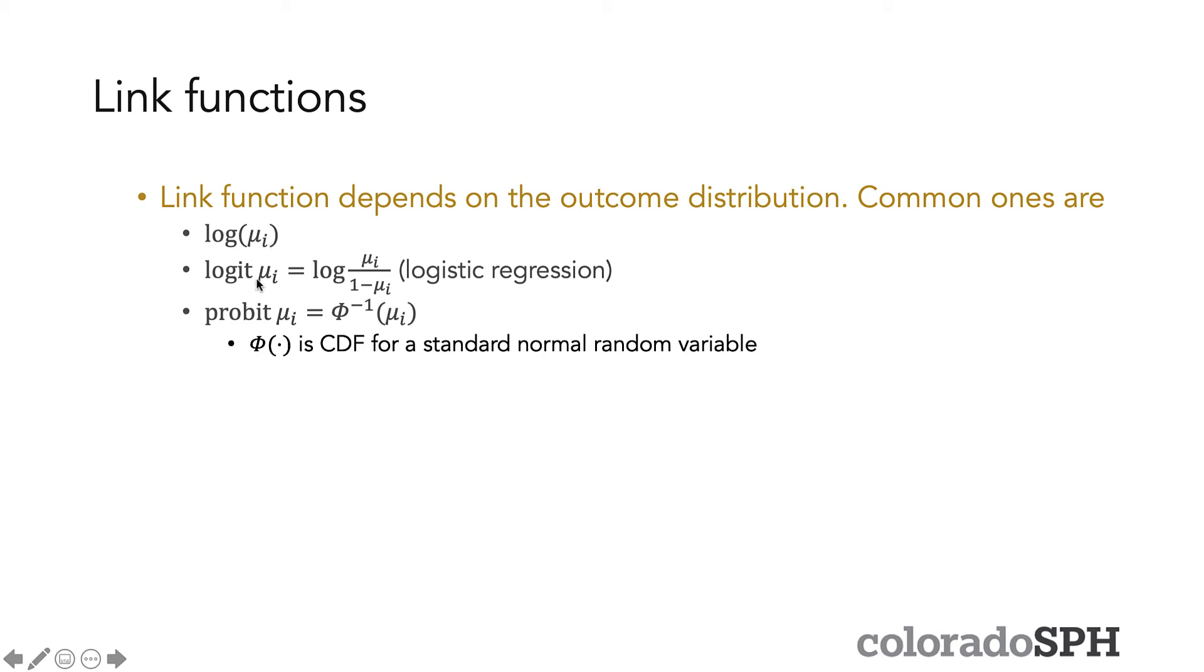Another common one is the logit link function where logit is the log of mu_i over 1 minus mu_i. And you actually saw this come up last lecture when we derived the exponential family form for the Bernoulli distribution because this is the link function for logistic regression for when you see binary data.